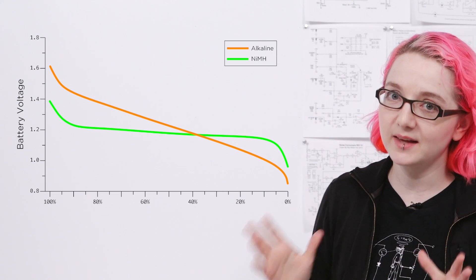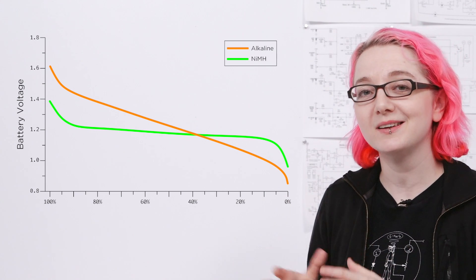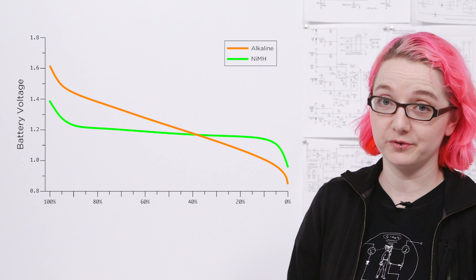Now doesn't sound like a big difference, but when you put a lot of cells in series, that can add up to quite a big voltage difference.